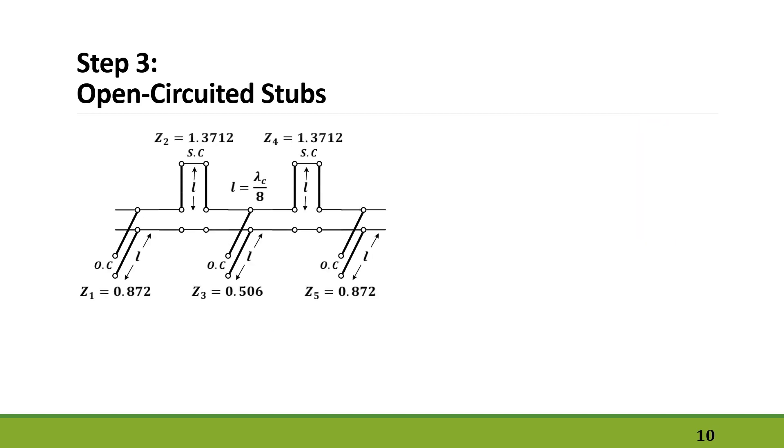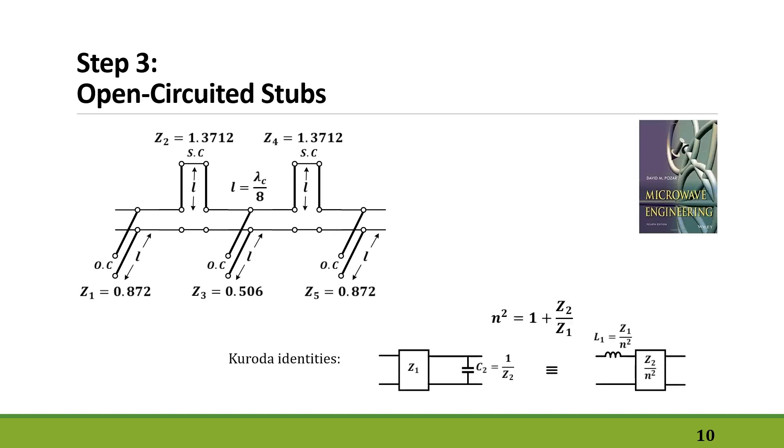Looking at our circuit again, we see that there is no unit element here. So we do a trick which may seem odd now, but we are going to turn the first and last capacitors into inductors. In order to do that, we still need the unit element.